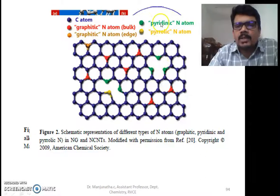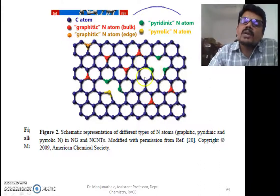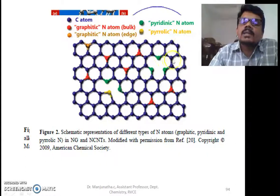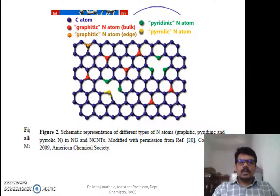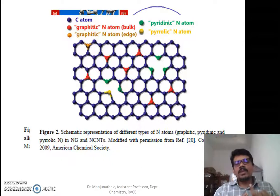Another one is pyridinic nitrogen atom, shown in green color. This forms a pyridine structure—one, two, three, four carbon atoms with one nitrogen, changing the hexagonal ring to a pyridine structure. This is the structural change we can expect in nitrogen-doped carbon nanotubes.